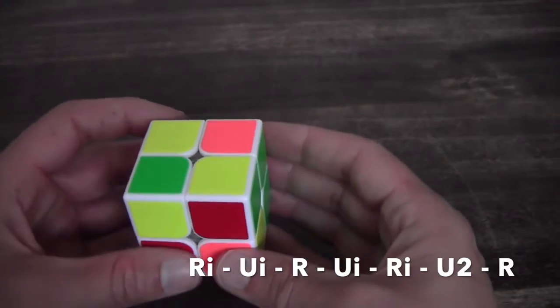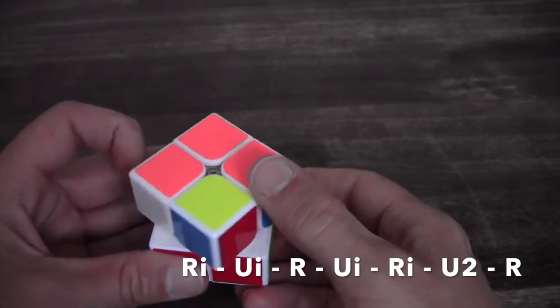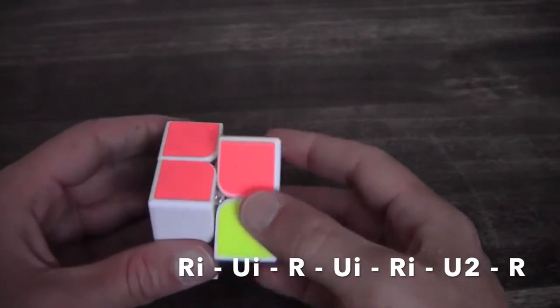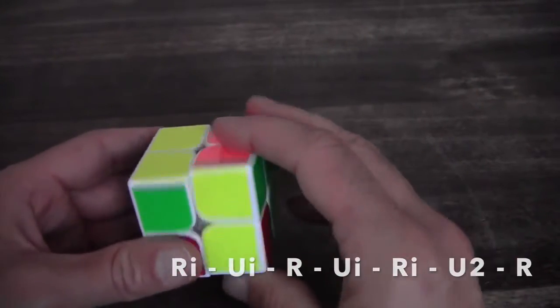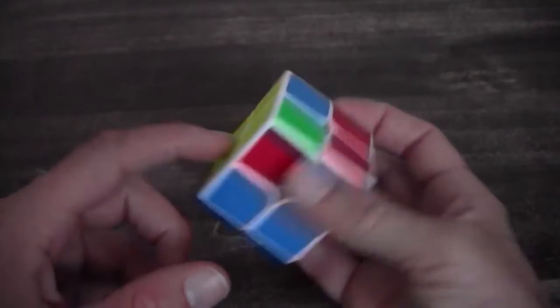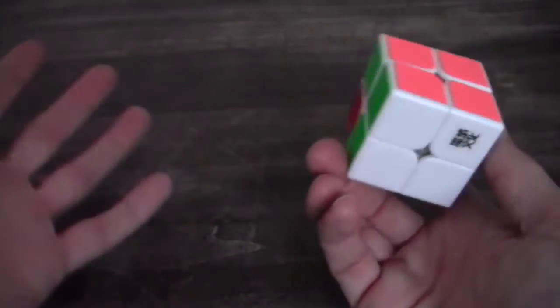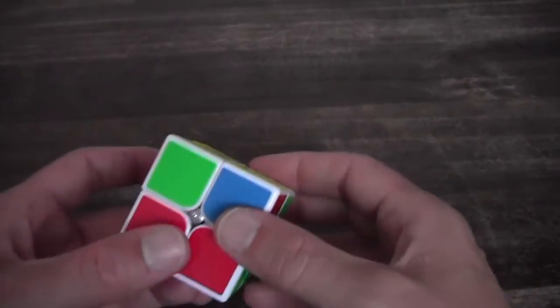R inverse U inverse R U inverse R U inverse U2 and with an R you fixed the top. So you can continue now with PLL algorithms to complete your total cube.